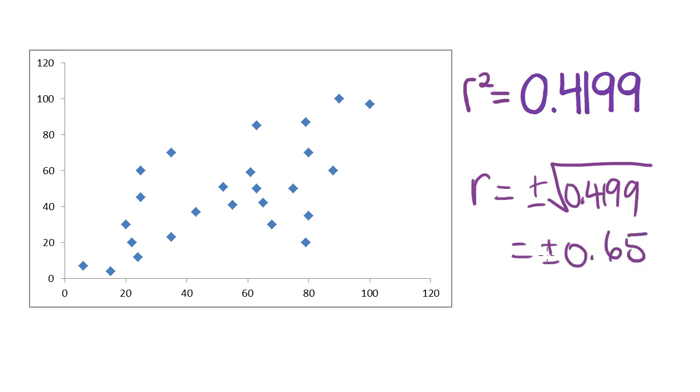Now, is it going to be the positive one or the negative one? Which way does the graph go? It's going in a positive direction. So r is positive 0.65.